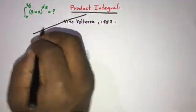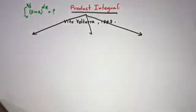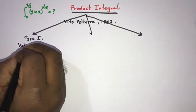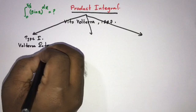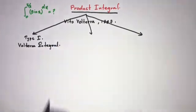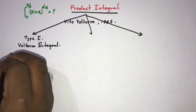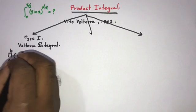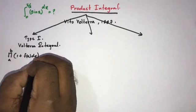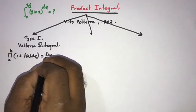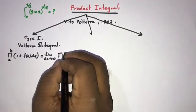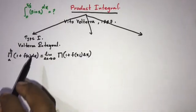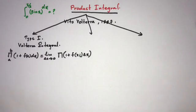Now we know what a product integral is, and there are three types. Type 1 is the Volterra integral. The general formula for the Volterra integral is: product from a to b of (1 + f(x) dx) equals the limit as Δx approaches 0 of the product of (1 + f(x_i) Δx).